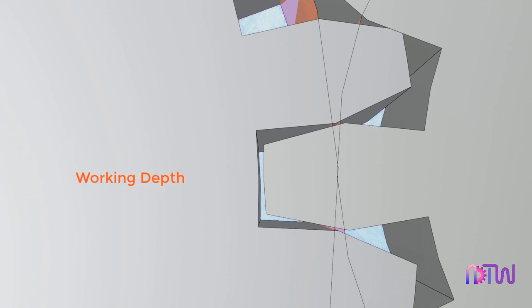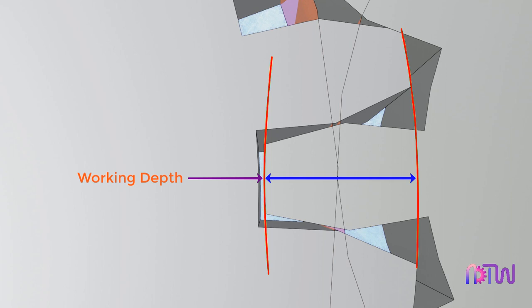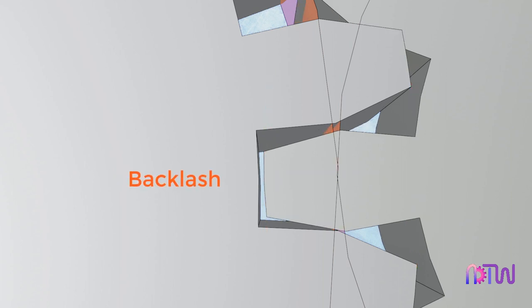Working Depth. It is the radial distance from the addendum of one gear to the addendum of another gear when both gears are in meshing condition. Backlash. It is the difference between the tooth thickness and the tooth space. It prevents jamming of the gears in meshing conditions.